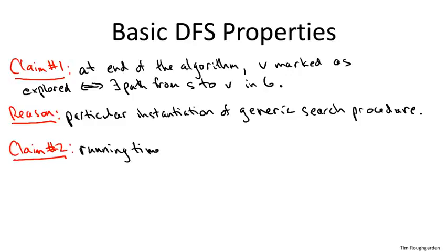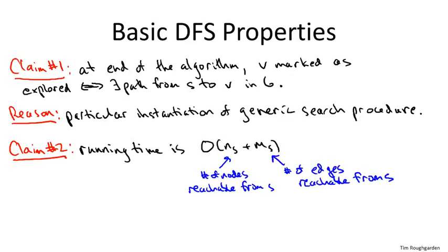Given that these exact same two claims hold for depth-first search as for breadth-first search, that means if we wanted to compute connected components in an undirected graph, we could equally well use an outer for loop with depth-first search as our workhorse in the inner loop. It wouldn't matter. Either of those for undirected graphs, depth-first search, breadth-first search, is gonna find all the connected components in O of M plus N time, in linear time.